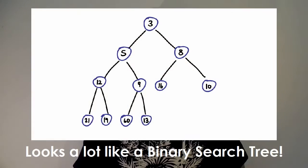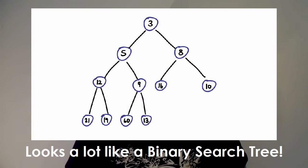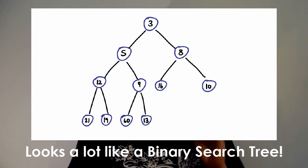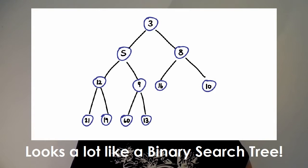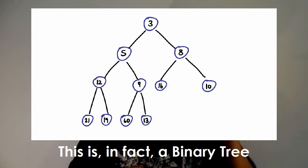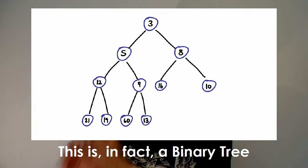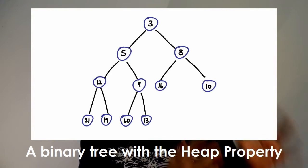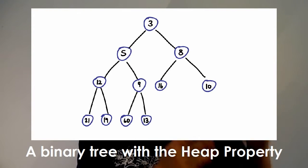Well, it looks like this. I don't think you need me to tell you how much this resembles an actual binary search tree, except the difference is this isn't a binary search tree at all. This is a binary tree, and instead of having the binary search tree property, it has a different property. This is known as the heap property.